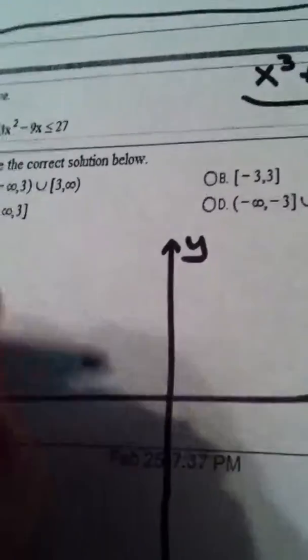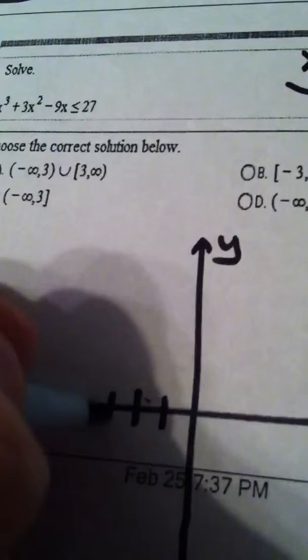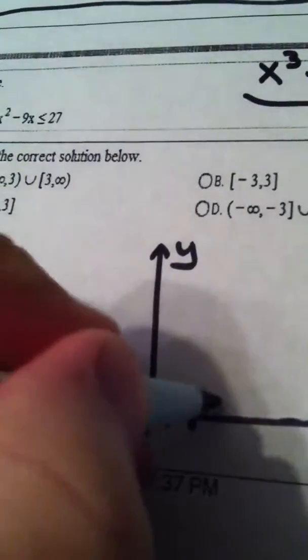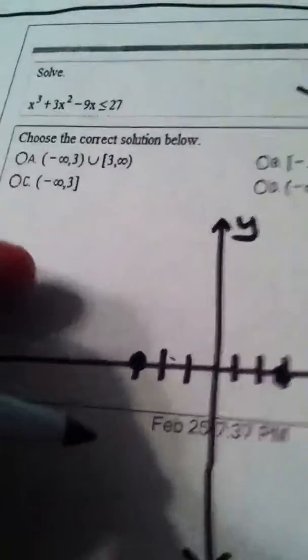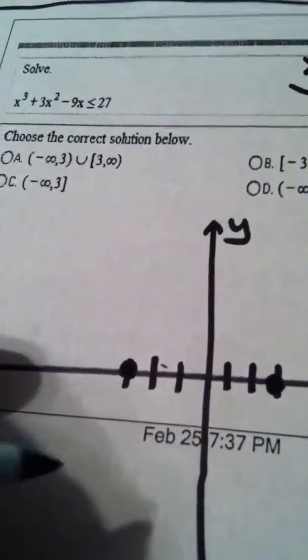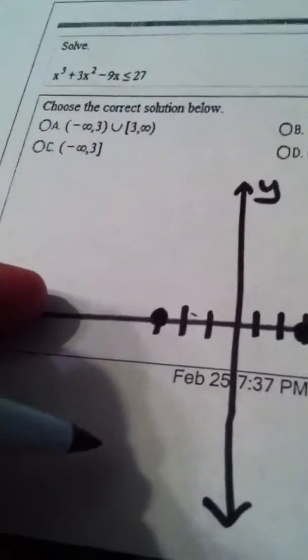Negative 3 and positive 3 are the zeros of this function, and I'm going to kind of copy the graph that I can at least see from the calculator.